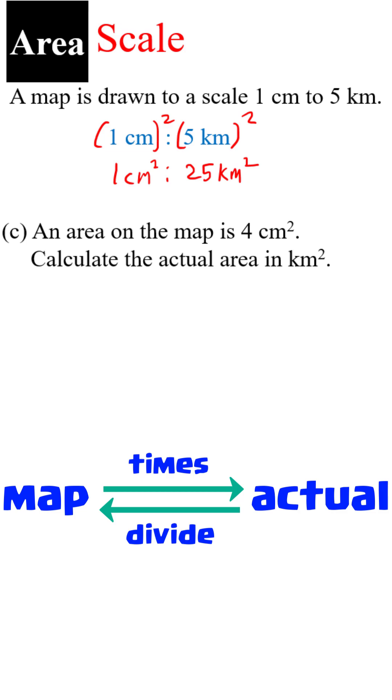The rest is the same. For C, map to actual means times. 4 times 25 will give us 100km².